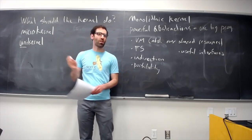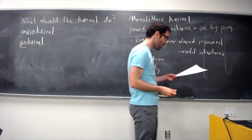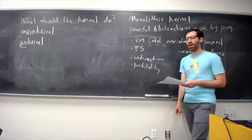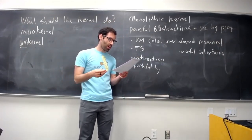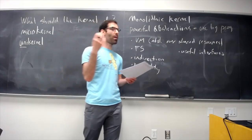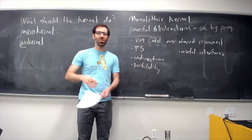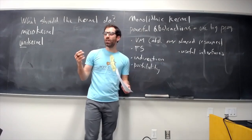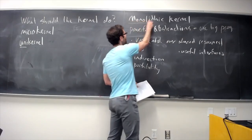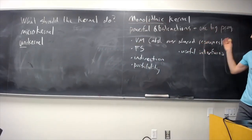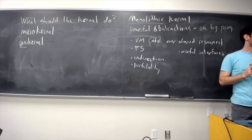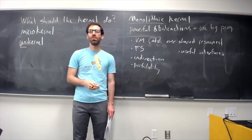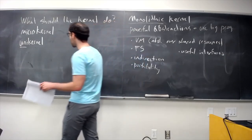Other abstractions include communication between processes — pipes for interprocess communication is a big one, which we'll talk about a lot when we get to microkernels. There are lots of useful interfaces hiding all sorts of complexity underneath. All these different abstractions living together in the same program means that implementing features like mapped memory or copy-on-write that cut across different abstractions is relatively straightforward, because they're all living together.